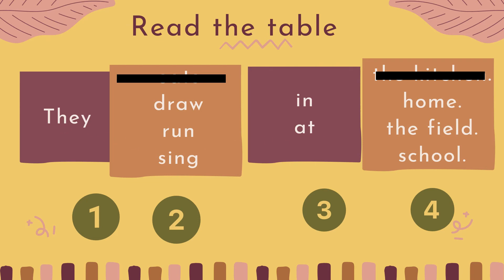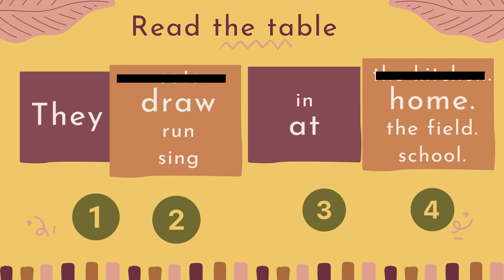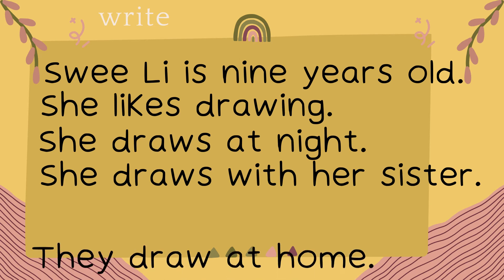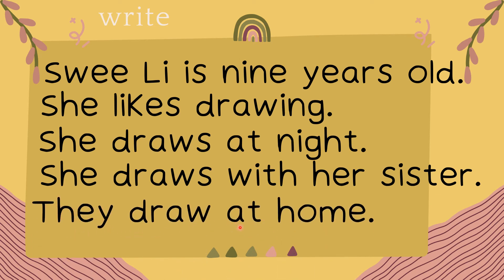Last one — day, draw. What is different between 'at' and 'in'? 'At' is a very specific place — maksudnya tempat tertutup dan tertentu. 'In' is for a big space — kawasan luas, contohnya di sekolah, sebab di sekolah banyak tempat. Copy: They draw at home.